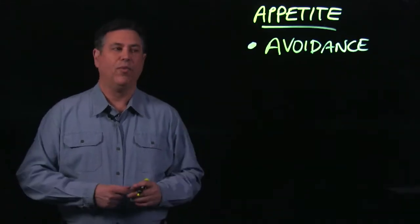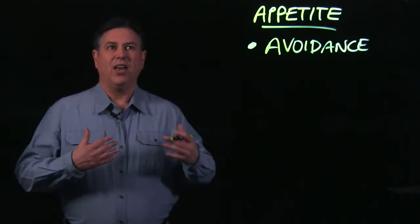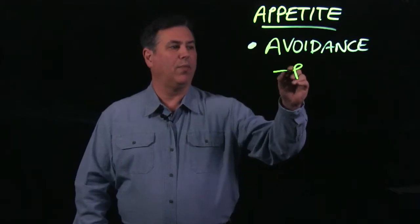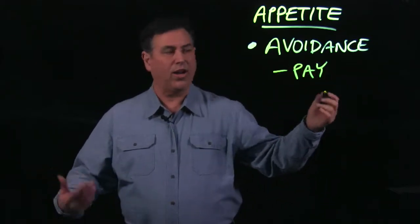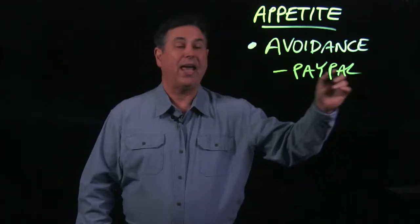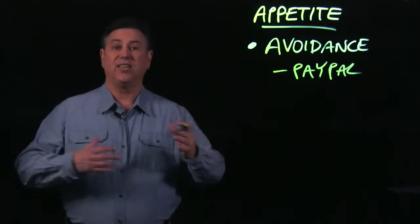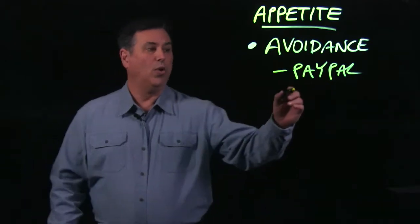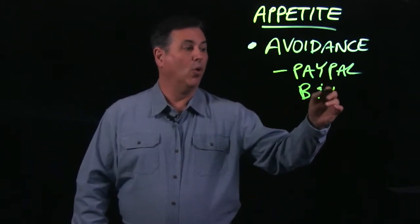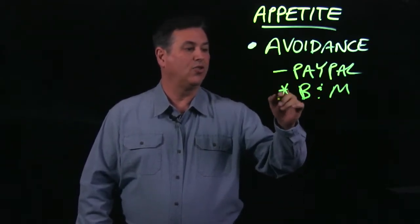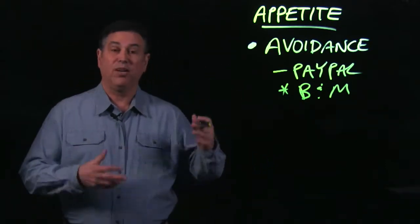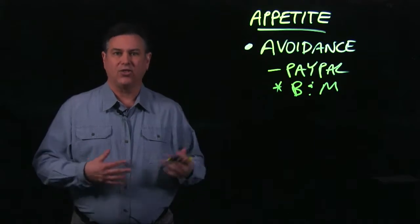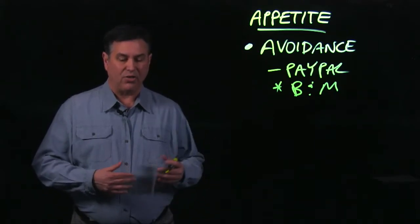For example, we might decide to not process our own credit cards. Maybe we decide that we're going to go through a broker for all of our credit card transactions like PayPal. Or let's say that we're not even going to sell any products online. Our services will not be provided online. We're just going to be brick and mortar. We want to avoid those risks of the Internet by just being a brick and mortar organization. So we can undertake certain activities that allow us to avoid risk.